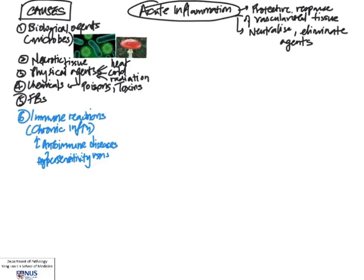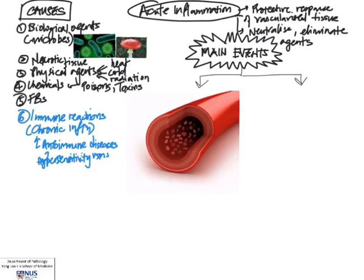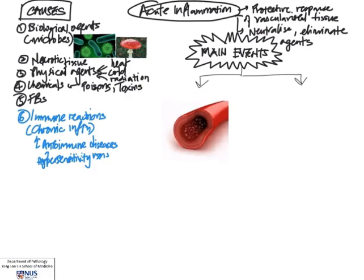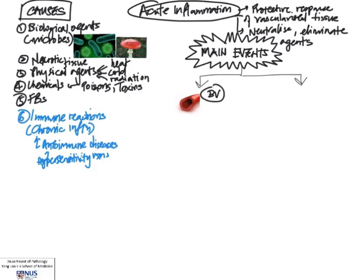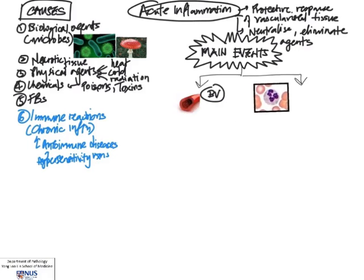Now that we've looked at the main causes of acute inflammation, let's focus on the main events that occur during acute inflammation. It's important to understand that there are two key players, and everything starts here. First of all, the blood vessels are very important — many of the key events occur in the vessels, usually small vessels and capillaries. The second key player would be the cells. Here you can see a neutrophil because there's a multi-lobed nucleus, also known as a polymorphonuclear leukocyte, and this is one of the key players in acute inflammation.